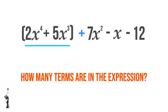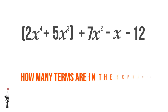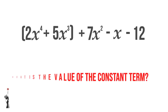So that's one term, plus 7X squared, minus X, minus 12 — which is a constant. We know that there are four terms in this expression. What is the value of the constant term? The constant term is a number with no variable, so the value is negative 12.